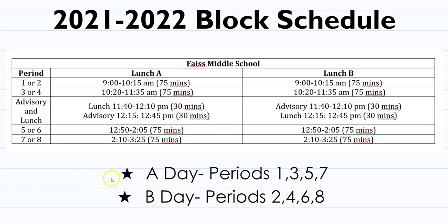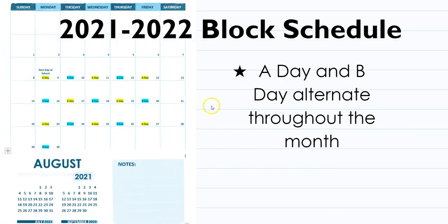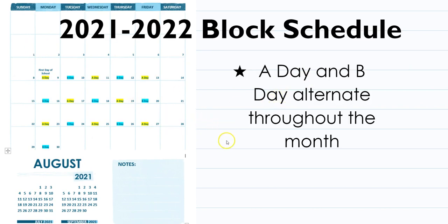This is a block schedule, so those of you who have been with us before, this is a new schedule system. Your first day of school would be an A day, followed by Tuesday B, Wednesday A, Thursday B, Friday A. That following week you would go back to B. A days and B days alternate as we go throughout the month.